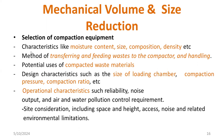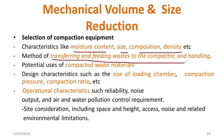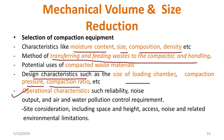These are the major parameters for mechanical volume and size reduction, especially for compaction. We need to consider features of compaction equipment like moisture content, size, composition, transferring and feeding waste to the compactor, potential uses for waste material, design features such as sizing and pressure level, compaction ratio, and operational features such as reliability, noise, and size concentration.